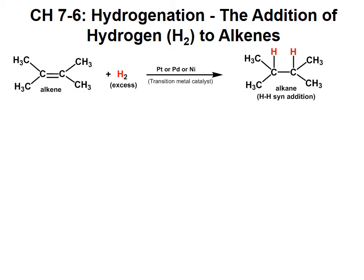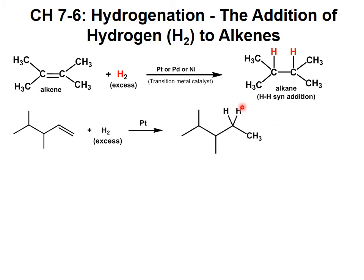Here are a few additional reactions we can look at. Here we have an alkene, an excess of hydrogen, and our metal catalyst. This sp2 carbon has one hydrogen on it; this sp2 carbon has two hydrogens on it. We're going to add one more to each, going from the alkene to the alkane. Remember, all hydrogenation is, is taking an alkene and converting it into an alkane.